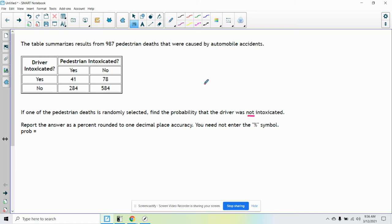So whatever we get, it's going to be out of the total 987. So it's going to be over 987. So of those 987, how many were situations where the driver was not intoxicated?